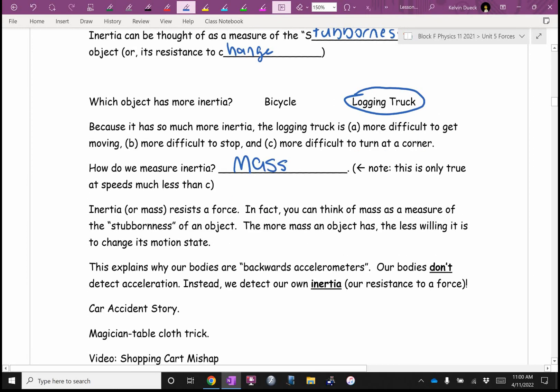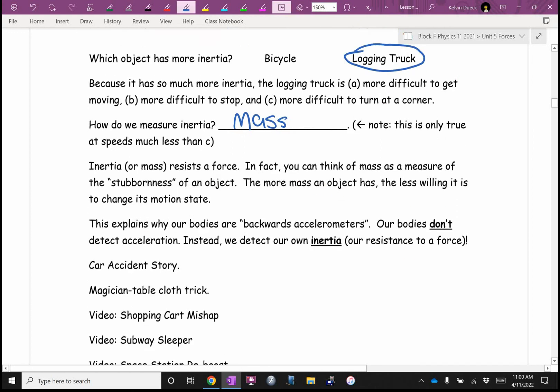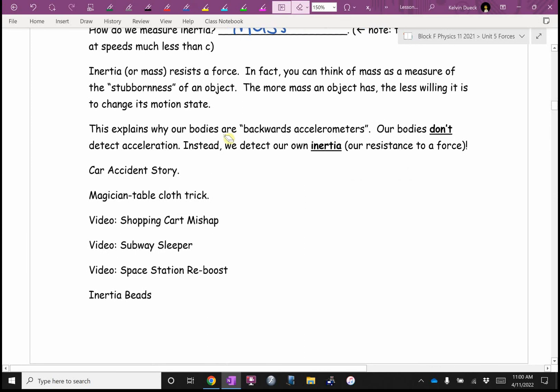Inertia, or mass, I'm going to use them interchangeably, even though they're technically not, resists a force. You can think of mass as a measure of the stubbornness of an object, like inertia. The more mass an object has, the less willing it is to change its motion state. So, this is why our bodies are backwards accelerometers. Our bodies don't detect acceleration. Instead, we feel our own inertia. Our own resistance to a force.